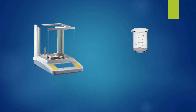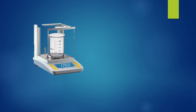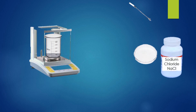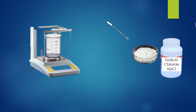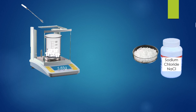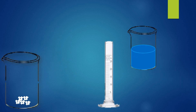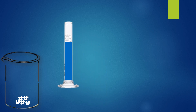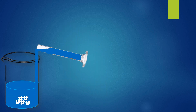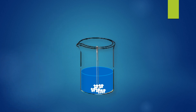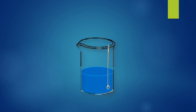First of all, turn the weight balance on. Place the empty beaker on the weight balance; it displays its weight. Now press the tare button — the weight balance shows the weight of the beaker as zero. Take 5.85 grams of sodium chloride in the beaker with the help of a spatula. Add some water into the measuring cylinder, then add it into the beaker containing 5.85 grams of sodium chloride. Stir the solution with the help of a spatula and continue stirring until all sodium chloride dissolves completely in water.